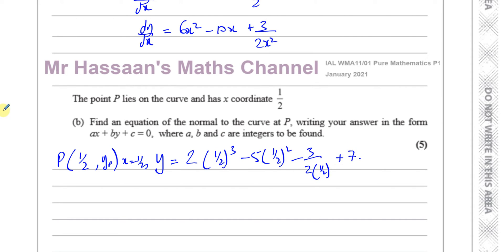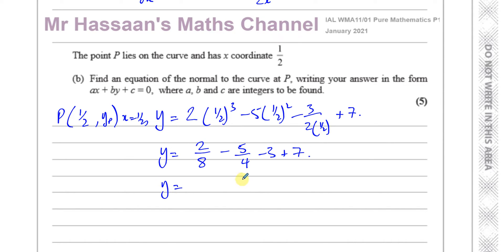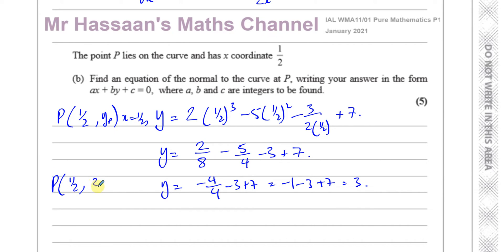Plus 7, yes. So that's 2 over 8 — because (1/2)³ equals 1/8 — minus 5 over 4, because (1/2)² equals 1/4, and 2 times 1/2 is 1 so that term gives minus 3, plus 7. That gives y equals 1/4 minus 5/4, which is (1 minus 5)/4 = minus 4/4, which is minus 1, then minus 3 plus 7 equals 3. So the coordinates of P are (1/2, 3).